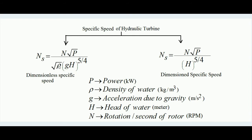Since rho is the density of water and it doesn't change much — even with temperature the change is very small — we can remove rho. Also, acceleration due to gravity is always 9.8 m/s², so we can remove that too. Removing density and acceleration due to gravity from the formula, we get the dimensioned specific speed formula: ns equals n times root(P) divided by h^(5/4), where n is in RPM, P is in kilowatt, and h is the head of water in meters.